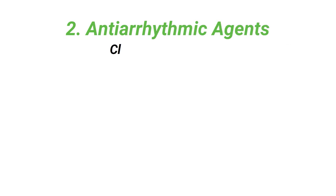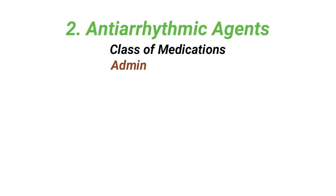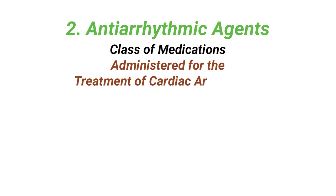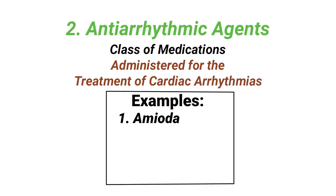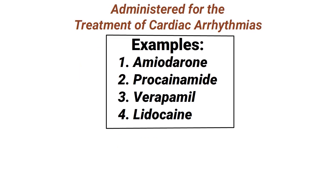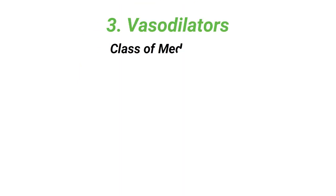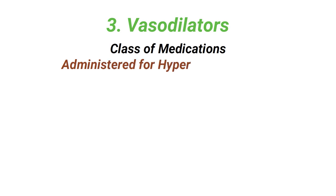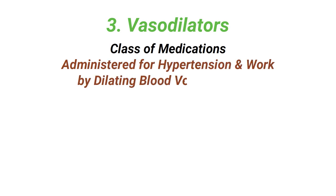Antiarrhythmic agents are a class of medications that are administered for the treatment of cardiac arrhythmias. Some examples include amiodarone, procainamide, verapamil, and lidocaine.